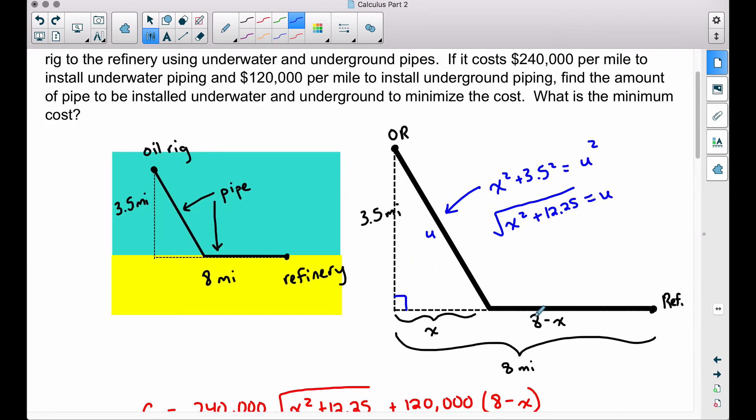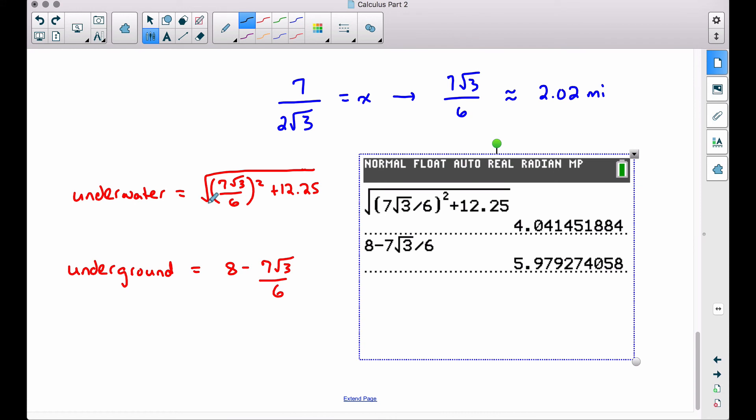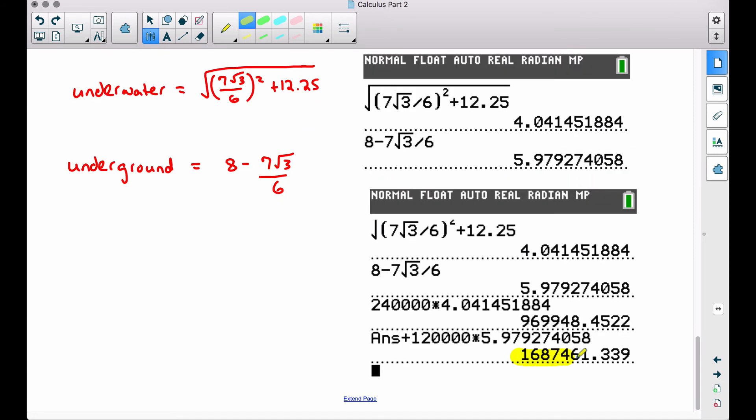Then the underground piping is going to be 8 minus x. So we can take that value of x that we just found, plug it into here to find the length of the underwater piping, plug it into here to find the length of the underground piping. And plugging in that x value into the underwater length and the underground length, the length of the underwater pipe is just over 4 miles, and the length of the underground pipe is just under 6 miles here. So these are the two lengths for our first two answers, the length of the underwater pipe and the underground pipe.